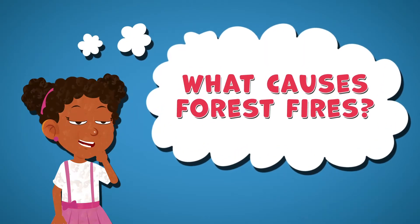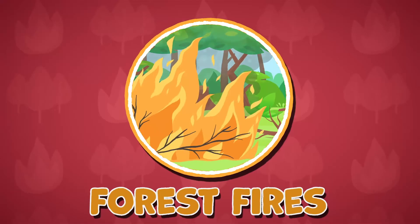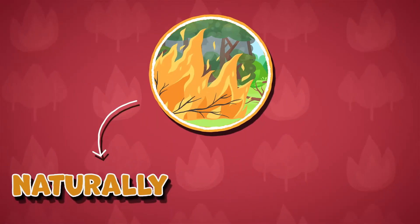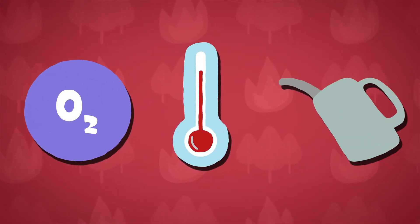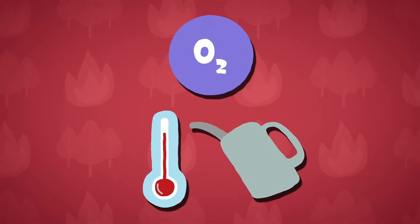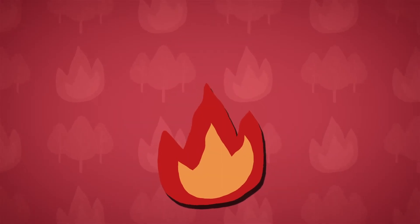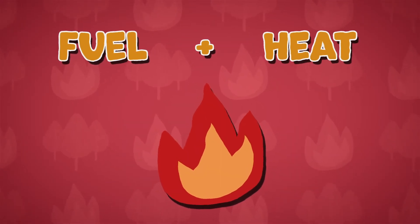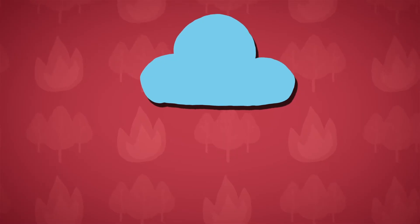Forest fires can occur two ways: naturally or unnaturally. All forest fires start when oxygen, heat, and fuel combine. Oxygen is all around us in the air, so when fuel and heat combine outside, a fire will start.